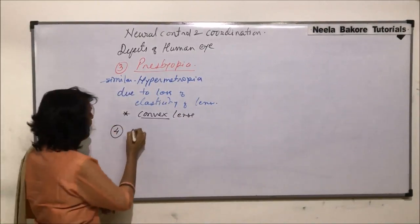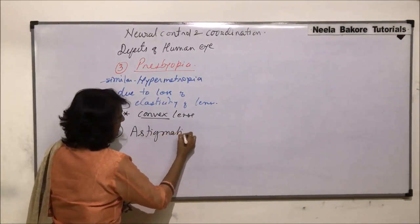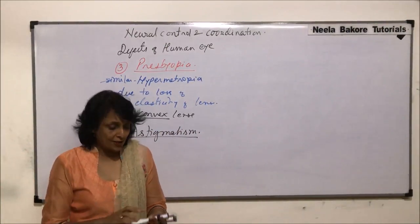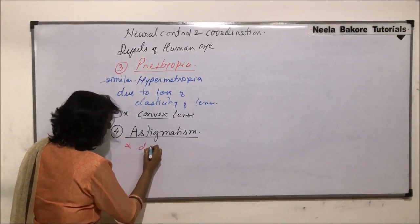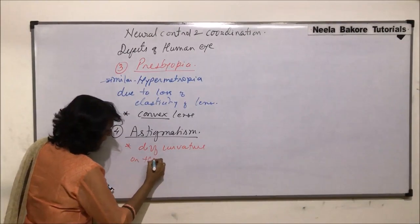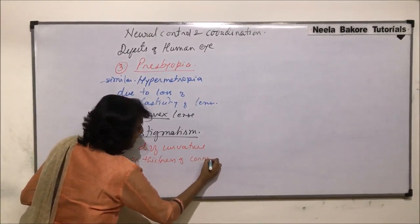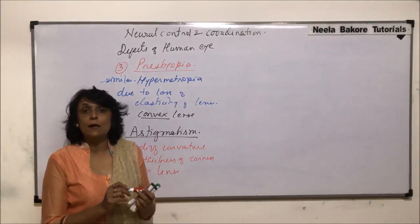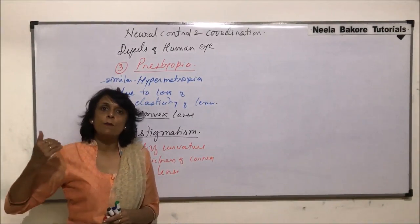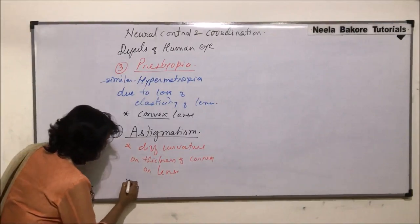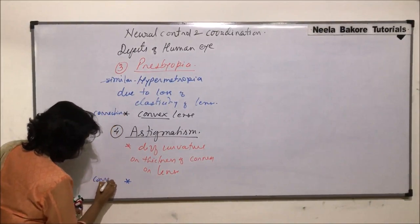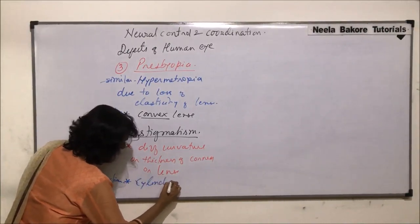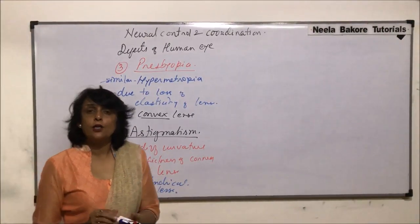The next disorder is known as astigmatism. This is due to different curvatures or thicknesses of the cornea or lens. When these kinds of problems are present, in some areas the image is formed in front of the retina and in some cases it is formed behind the retina. Correction is done using cylindrical lenses.